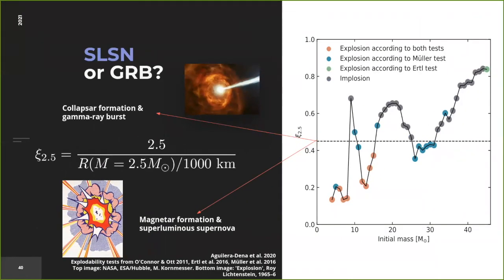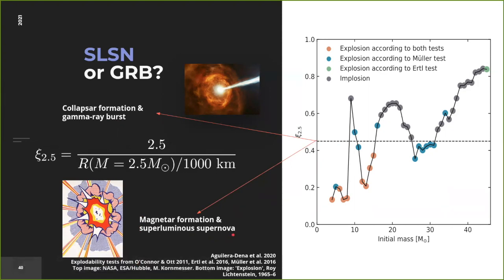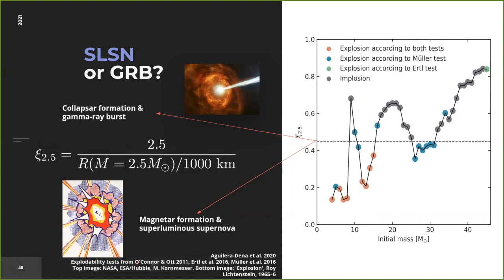These models are probably able to explain both superluminous supernovae and gamma ray bursts, so there has to be a way to differentiate them. We performed the same explodability tests as before. We propose that stars in this evolutionary channel with low compactness will be able to explode, forming a powerful magnetar that results in a superluminous supernova. Those that do not manage to explode will instead form a critically rotating black hole, observed as a gamma ray burst accompanied by a broadline type 1c supernova from the interaction between the jets and the rest of the star.